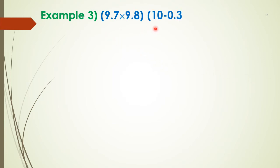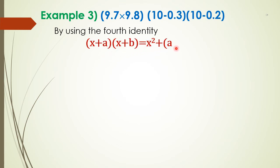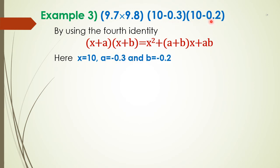Example 3: 9.7 into 9.8. We can write this as (10 - 0.3) into (10 - 0.2). We use the fourth identity: (x + a) into (x + b) = x² + (a + b)x + ab. Here x is equal to 10, a is equal to minus 0.3, and b is equal to minus 0.2.